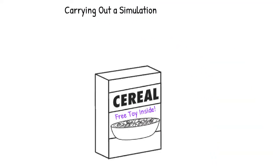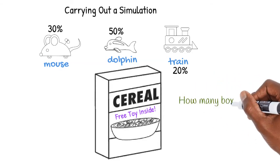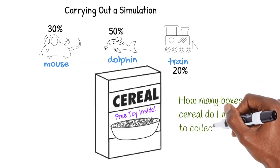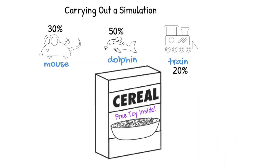In a previous video, we were presented with a situation in which a free toy came in a box of cereal. 30% of boxes have a toy mouse, 50% have a toy dolphin, and 20% have a toy train. We were then presented with the question: how many boxes of cereal do I need to collect all three toys? We spoke about buying and opening several boxes, but doing that enough times to get a reliable answer is not realistic. Instead, we will set up and run a simulation.